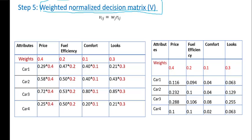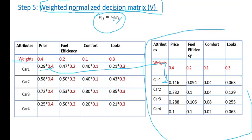Step number 5: find the weighted normalized decision matrix V. To get that, we write the weights at the top row: 0.4, 0.2, 0.1, and 0.3. V_ij is calculated as W_j (weight) multiplied by the normalized value for each element. We have done this for all attributes. For example, 0.29 multiplied by 0.4 comes to be 0.116. This matrix is known as the weighted normalized decision matrix, capital V.